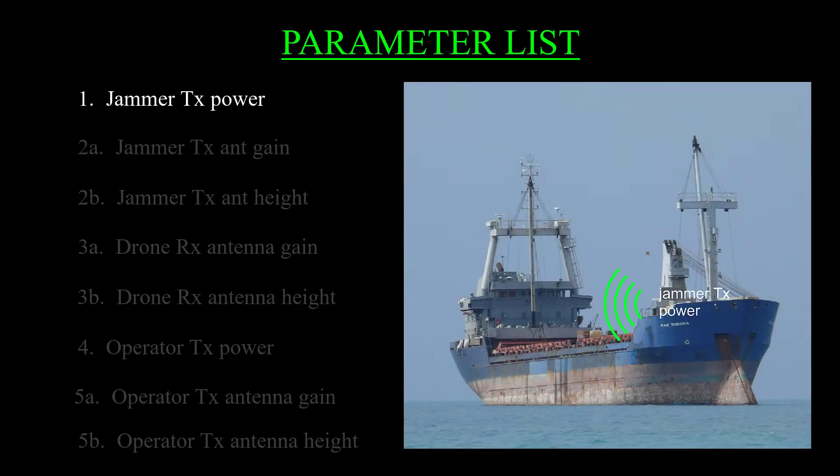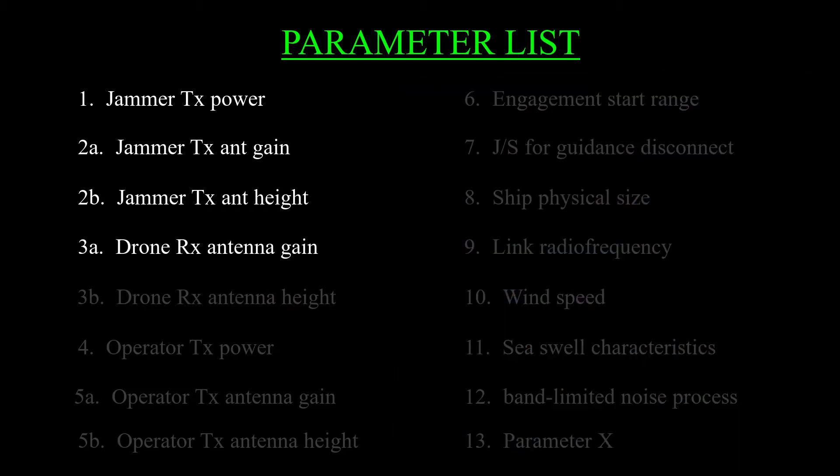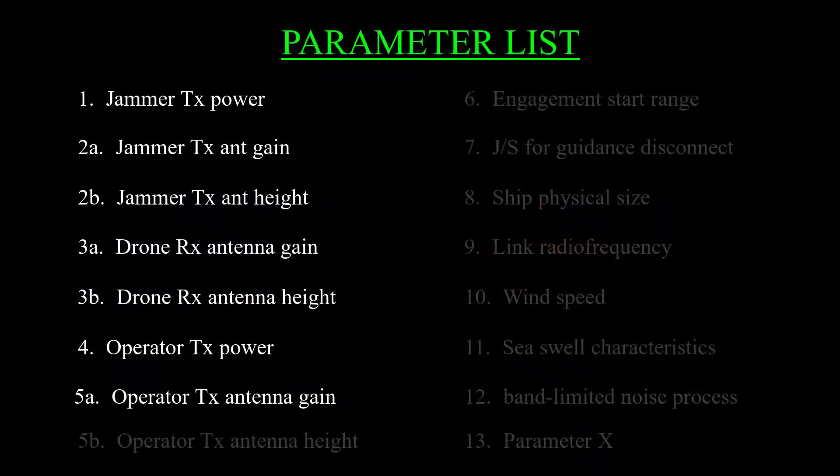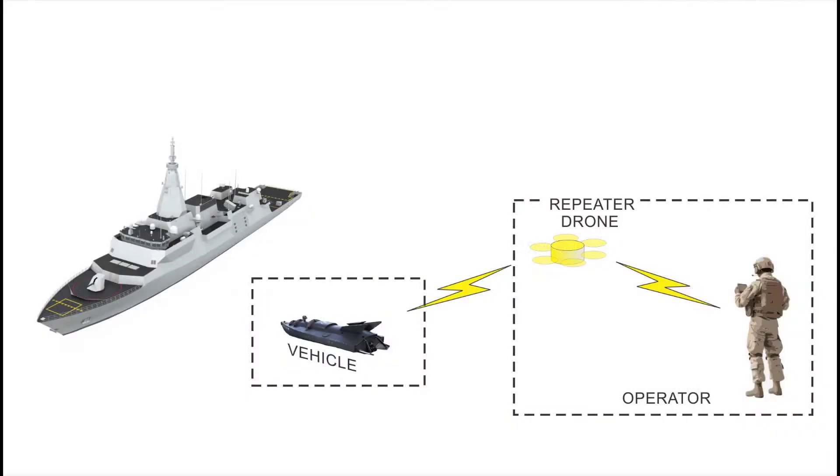Number one, jammer transmitter power. Number two, jammer antenna gain and height above the mean sea surface. Three, drone receive antenna gain and height. Four, the operator's transmitter power. That's the power of the transmitter that sends the control signal to the drone. Five, the operators transmit antenna gain and height.